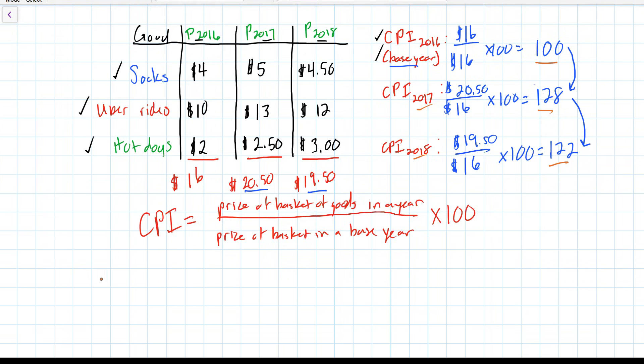Inflation is defined as a change in the price level over time. Using a consumer price index, we can calculate inflation as the percentage change in the CPI between two years. So inflation is always between two periods of time. We can calculate inflation between 2016 and 2017 by calculating the percentage change in the CPI between those two years.